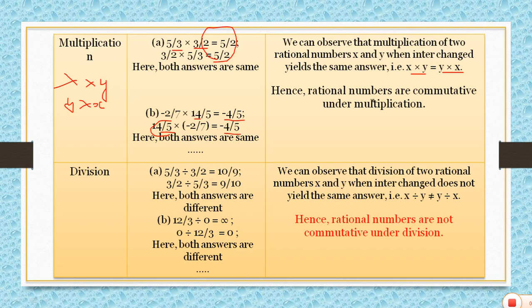So rational numbers follow commutative property under multiplication. x multiplied by y equals y multiplied by x — the result is always the same.